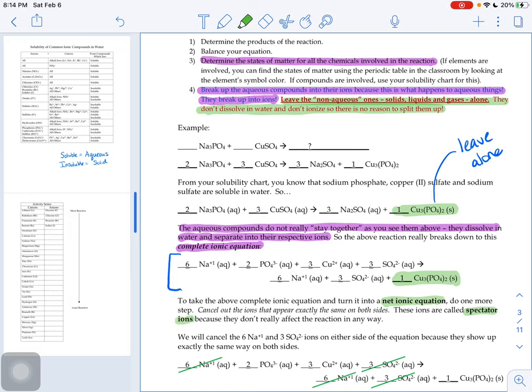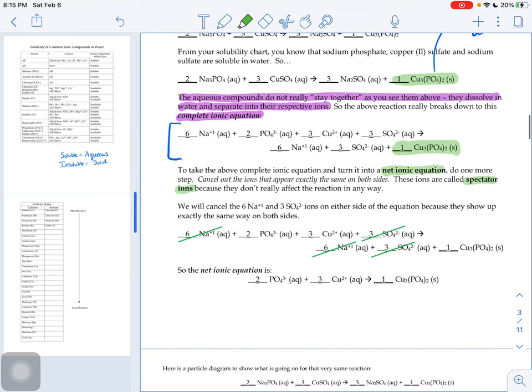These ions are called spectator ions because they don't really affect the reaction in any way. If this was not COVID and you guys actually could participate in sporting events and plays and all kinds of fun things that are going on at school during a usual school year, if you're a spectator to an event, you're on the sidelines watching, right? Well, that's what happens with our spectator ions in reactions.